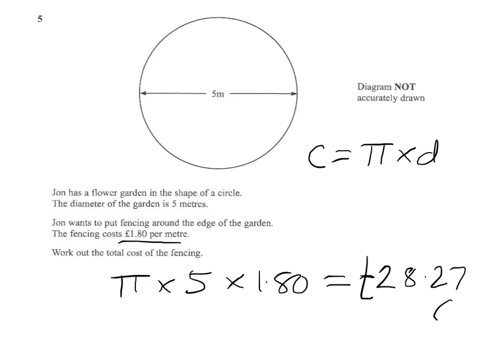The third decimal was a 4, so that means that we don't change the 7. So the answer is £28.27.